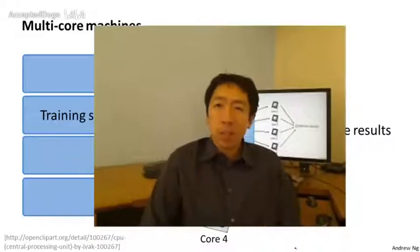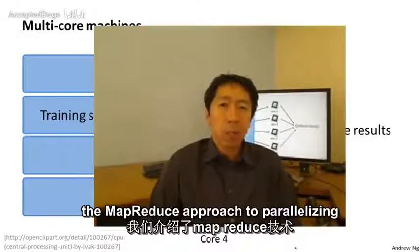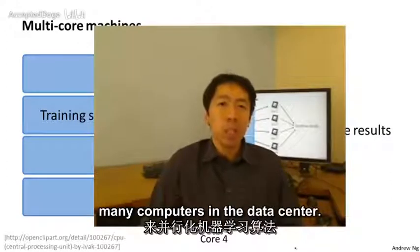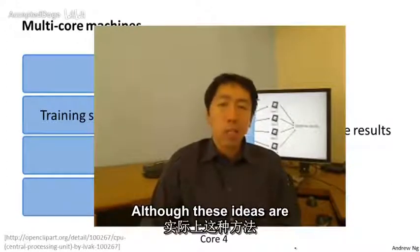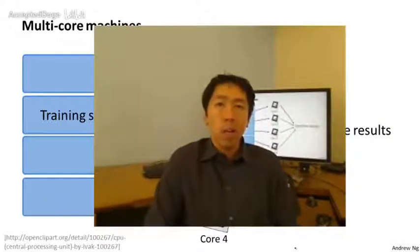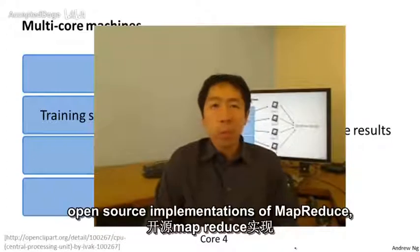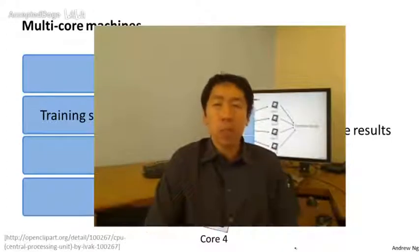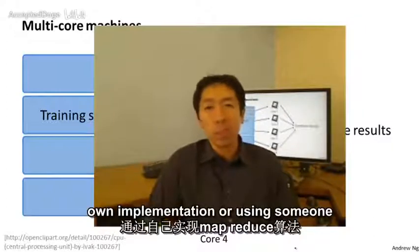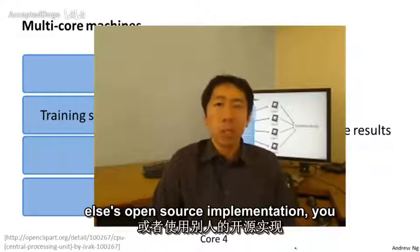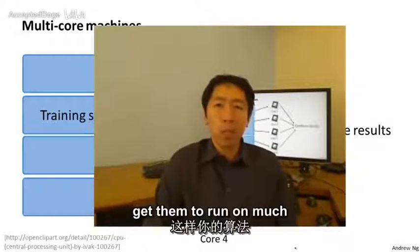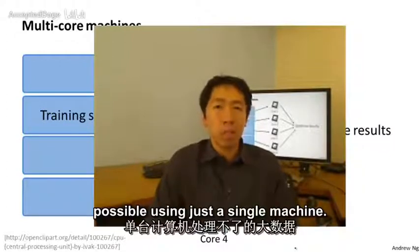In this video, we talked about the MapReduce approach to parallelizing machine learning by taking your data and spreading it across many computers in the data center, though these ideas are also applicable to parallelizing across multiple cores within a single computer. Today there are good open source implementations of MapReduce—many users of an open source system called Hadoop—and using either your own implementation or someone else's open source implementation, you can use these ideas to parallelize learning algorithms and get them to run on much larger data sets than is possible using just a single machine.